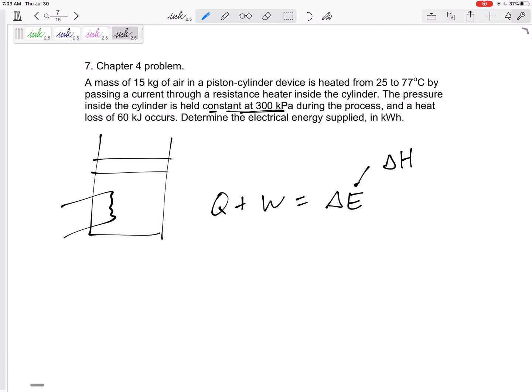Alright, so anyway, this is a delta H. This is M times H2 minus H1. I can get this from maybe from property tables or CP delta T.